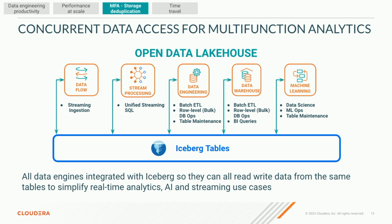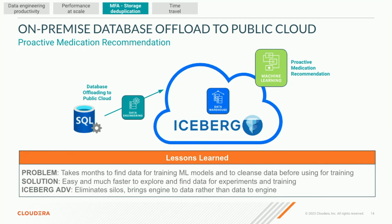When everybody speaks Iceberg, it all works together. We don't have to worry about changing file formats, building connectors between systems, or going from engine to engine. With all data engines integrated with Iceberg, they can read and write the same tables. It simplifies real-time access, artificial intelligence, and streaming use cases. For example, with an on-premises traditional relational database that we want to offload to the public cloud — by using Iceberg, the data engineering writes directly into Iceberg table formats, data warehousing does analytics on those Iceberg formats at better performance, and we can add secondary use cases like machine learning model training, all without moving, transferring, translating, or reconfiguring the data.